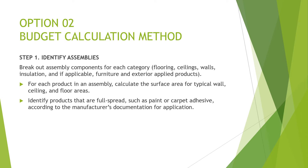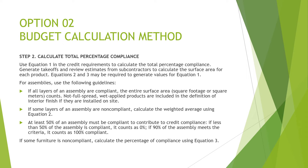For option two — the budget calculation method — step one is to identify assemblies and break out assembly components for each category. For each product in an assembly, calculate the surface area for typical wall, ceiling, and floor areas, and identify products that are full-spread such as paint or carpet adhesive according to the manufacturer's documentation for application. Then calculate the total percentage compliance using equation one in the credit requirements. Generate takeoffs and review estimates from subcontractors to calculate the surface area for each product; equations two and three may be required to generate values for equation one.